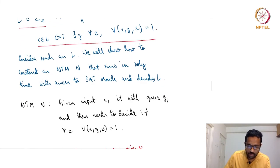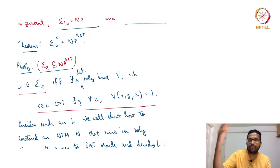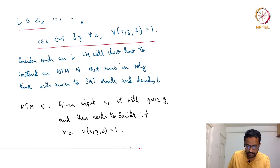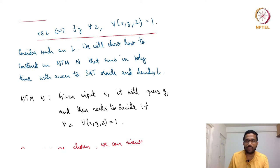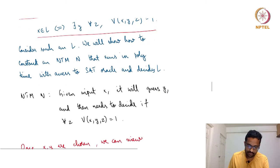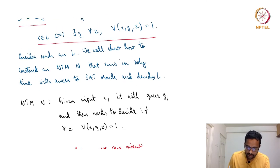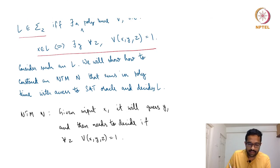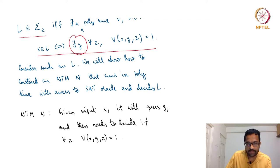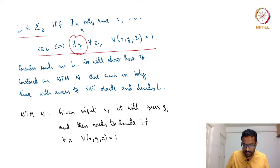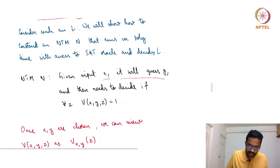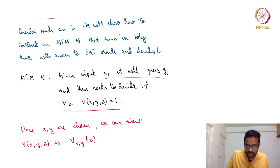Now consider such an L. We need to show it is also in NP with access to a SAT oracle. We construct a non-deterministic polynomial-time Turing machine with access to a SAT oracle. Given input X, the NP machine can guess Y. But NP cannot directly handle the 'for all Z' part. Once X and Y are fixed, V(X,Y,Z) becomes a function of Z alone.